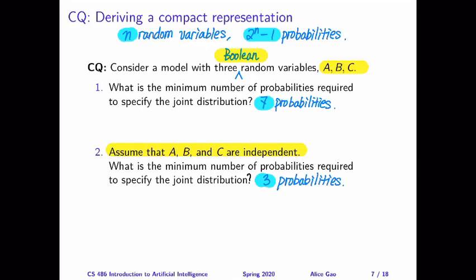Hello, everyone. This is Alice Gao. In this video, I'm going to discuss the two questions in lecture 11 slides on slides 7 and 8. These questions are asking you to calculate the minimal number of probabilities to represent a joint distribution, sometimes when we know nothing about the random variables, and other times when we know some conditional or unconditional relationships between the variables.